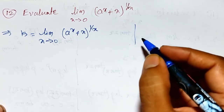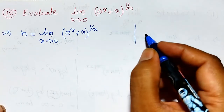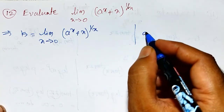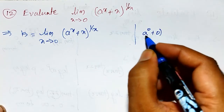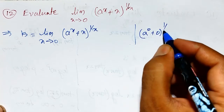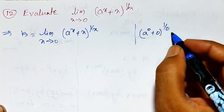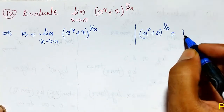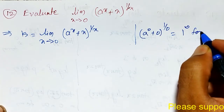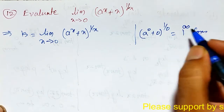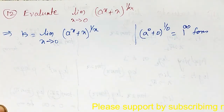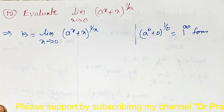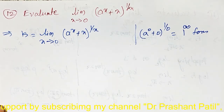As x tends to 0, I have to check which indeterminate form this leads to. Substituting x equal to 0: a raised to 0 plus 0 raised to 1 by 0 — that is, a raised to 0 is 1, 1 plus 0 is 1, so we get 1 raised to infinity form. To evaluate this 1 raised to infinity form, it is not directly possible — I have to convert it into 0 by 0 or infinity by infinity form.